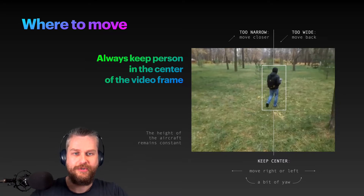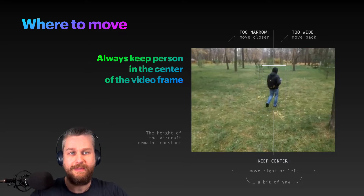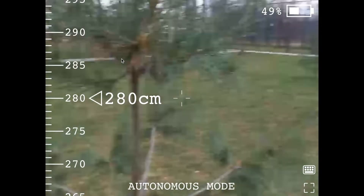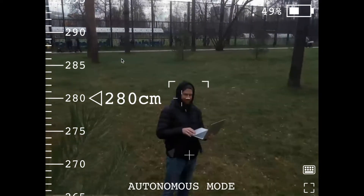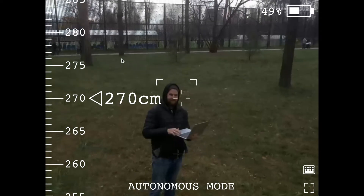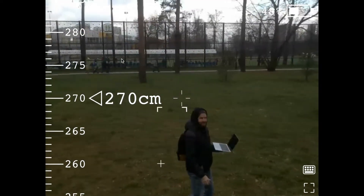The height of the drone remains constant, since we expect people to always stay on the surface. Now let's see some examples of how the drone flies autonomously. Person detected. Following. Person detected.